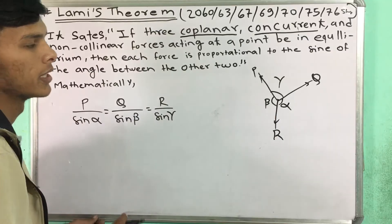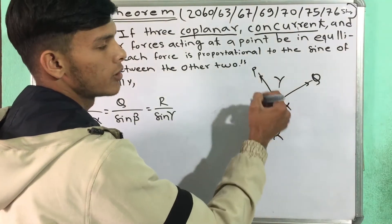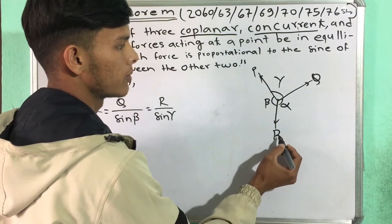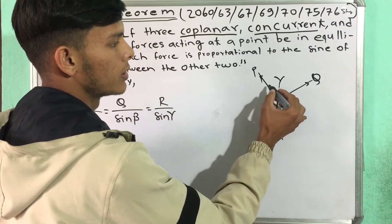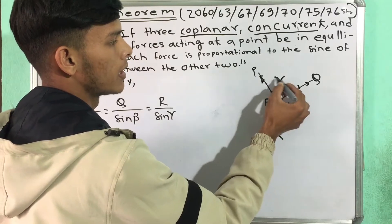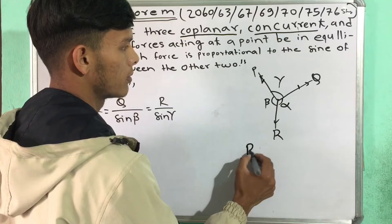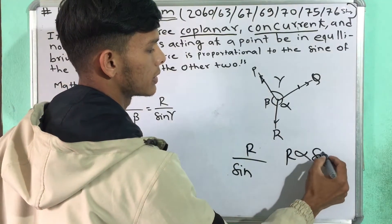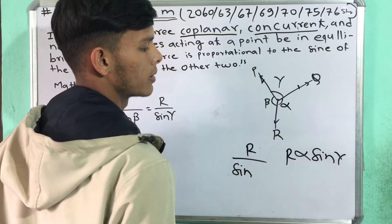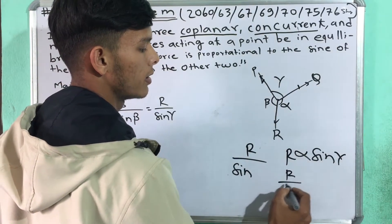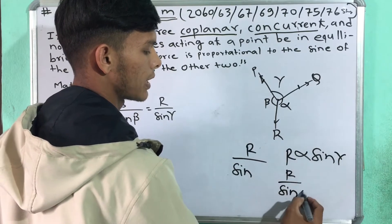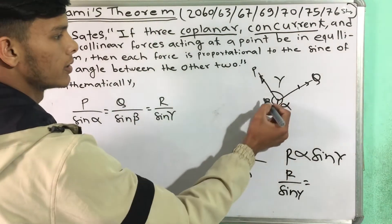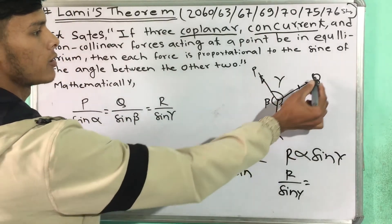If a non-collinear force acts at a point and is in equilibrium, then each force is proportional to the sine of the angle between the other two forces. So P force divided by sine alpha, Q force divided by sine beta, and R force divided by sine gamma.